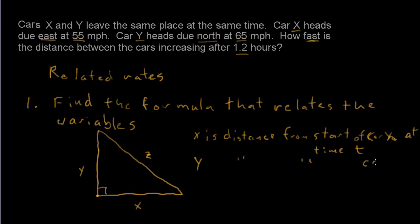And then z is the distance between the two cars at that same time t.